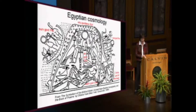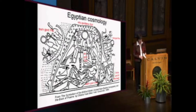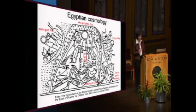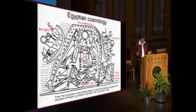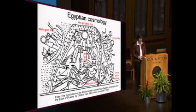Imagine you were an Israelite hearing Genesis 1 for the first time. You would have hardly noticed physical structures like the firmament, because everyone knows that. But you would have been captivated by the idea that the god of Israel is the only god in the story — the other gods are missing. The sun is not the powerful Egyptian sun god Ra, but merely a greater light, a physical object made by Israel's god.